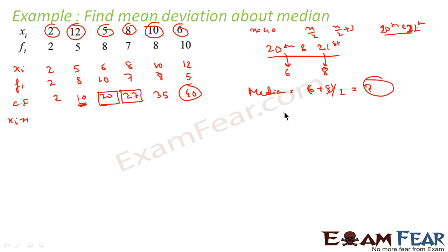So I have to write xi minus m. Distance of 2 from 7 is 2 minus 7 mod, that comes out to be 5. Similarly, distance of 5 from 7 is 5 minus 7 mod, that is 2. Distance of 6 from 7 is 6 minus 7 mod, that is 1.